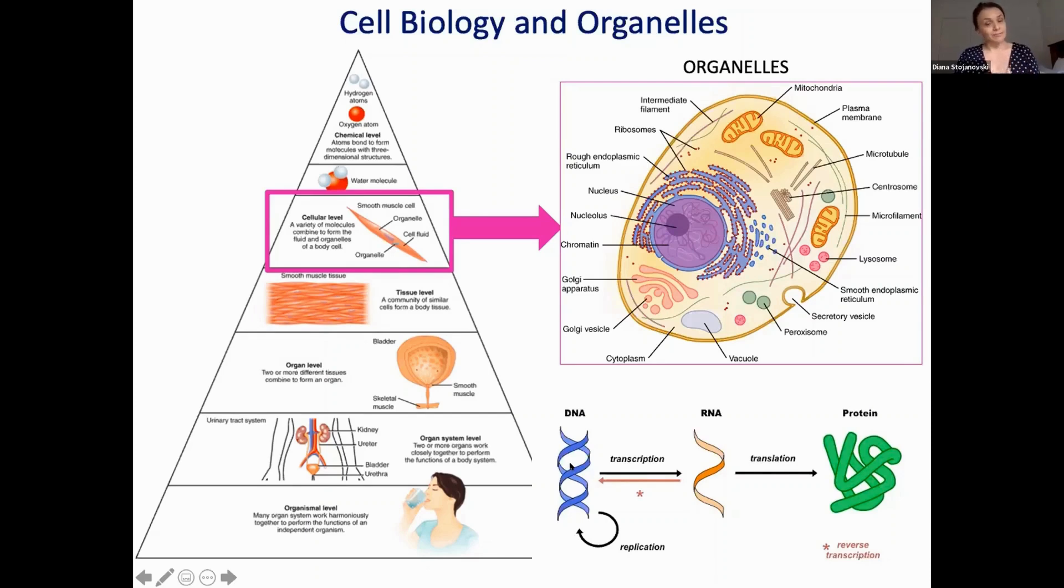What genes do is they are converted into a very important message by this process. They are converted into a message called RNA, and this RNA finds its way out of the nucleus to these little dots here. These are protein producing factories called ribosomes, and these ribosomes convert this message into a protein. The protein is then targeted to the appropriate location in the cell where it can function.